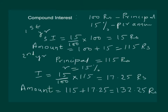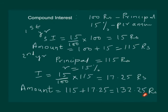So the amount to be returned is 115 plus 17.25, which equals 132 rupees and 25 paisa. We can notice that compound interest increases year after year and it is more than simple interest. For the same example, simple interest gives 130 rupees for two years, while compounded annually the amount is 132 rupees and 25 paisa.